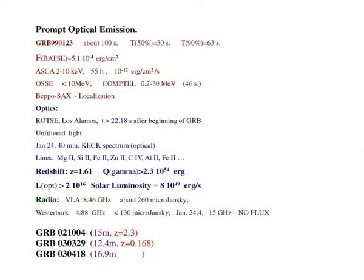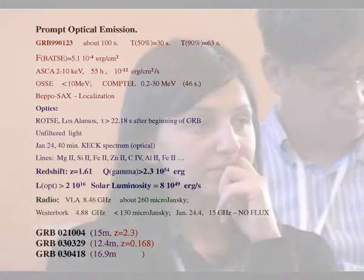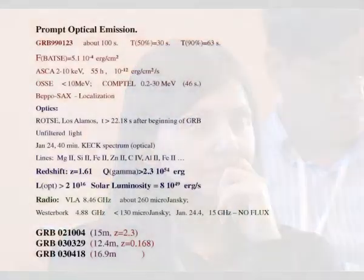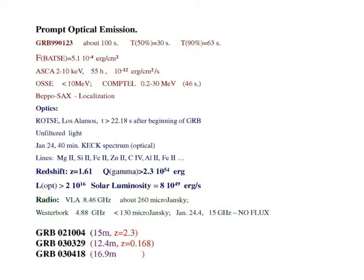Most interesting for the origin of gamma-ray bursts is the prompt optical emission, because what we see at later times is connected with the surroundings. But the prompt optical emission should tell us something about the nature of the central engine. The first prompt emission was found in 1999 and started after about 100 seconds. This light curve was very important but had a very small number of points — there are only three points — so we can put only a triangle for this gamma-ray burst. The luminosity drops very quickly in the prompt emission.